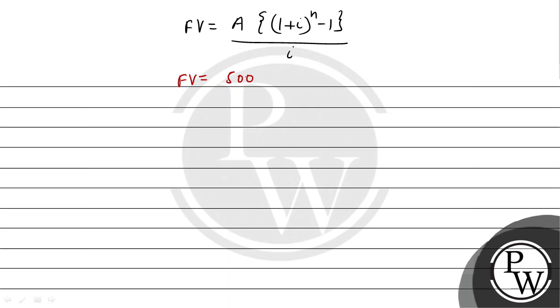Future value is equal to capital A which is 500 rupees, times (1 plus i) - i है मेरा 0.1 - raised to the power 12 minus 1, divided by 0.1.